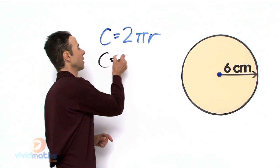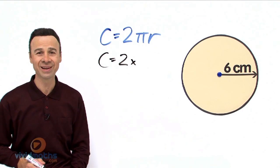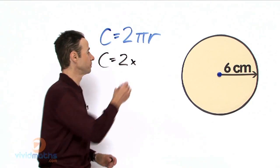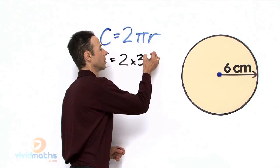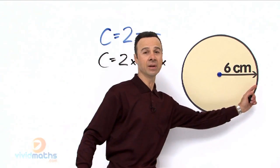So, circumference C equals 2 times pi, where the value of pi is 3.14, times the radius which is 6 cm.